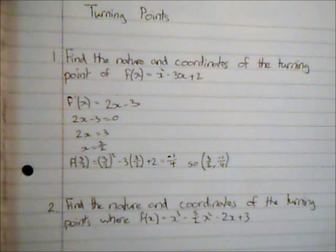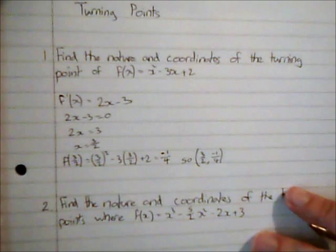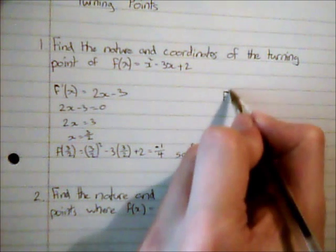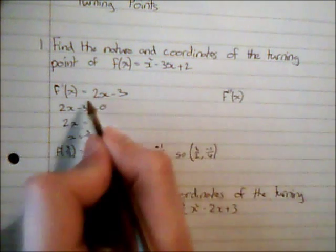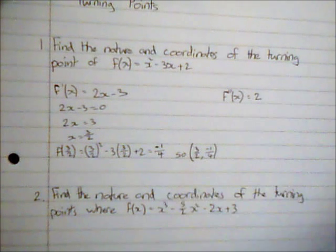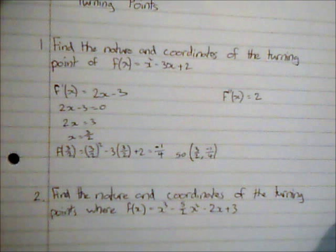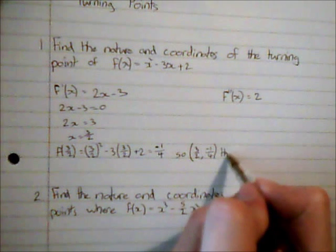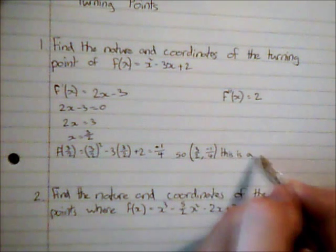When we talk about the rate of change of the gradient, we're basically finding the gradient of the gradient function. So I'm going to use f double-dash of x — I'm going to differentiate again — and that gives me 2. So that's positive, and because the second derivative is positive, this is a minimum point.